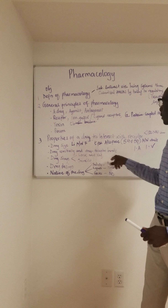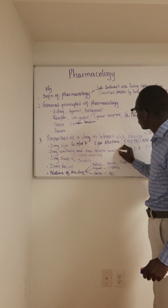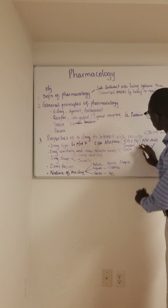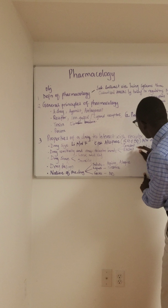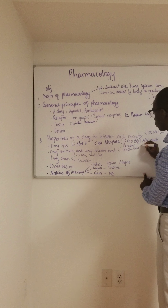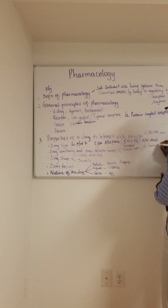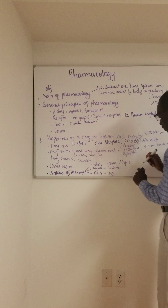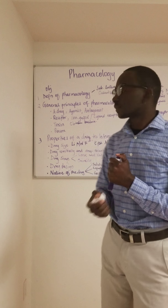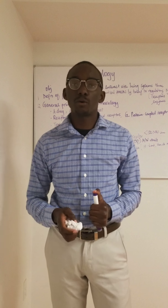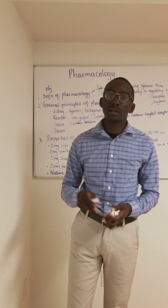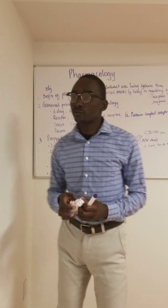Under drug reactivity and drug-receptor bonds we have three types of bonds: the first one is covalent, the second is electrostatic — under which we have hydrogen bonds and van der Waals forces — and the third is hydrophobic. Under covalent bonding, the bond is usually irreversible — it is a very strong bond in biological systems. One of the drugs that forms a covalent bond is aspirin.